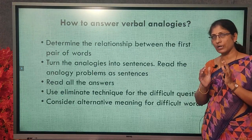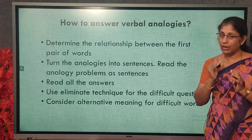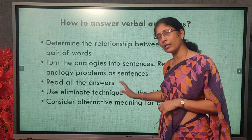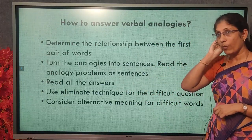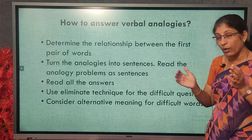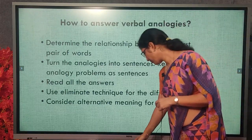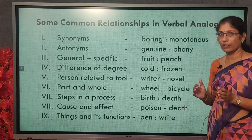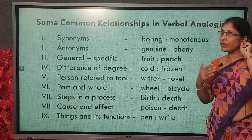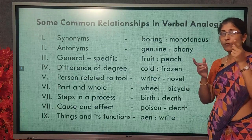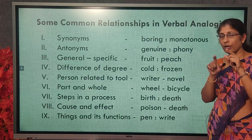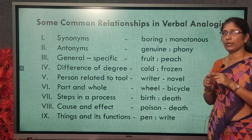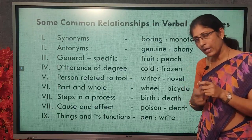We will see in the examples how to understand an unfamiliar word by its root. Elimination technique is the best technique when meaning sets are given and where we can't find the relation. Knowing what type of pairs are given is also an important strategy. If we are able to find what type of relation exists between the words, then we can easily guess the meaning and make a sentence.